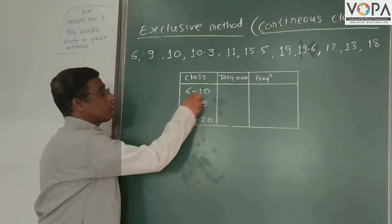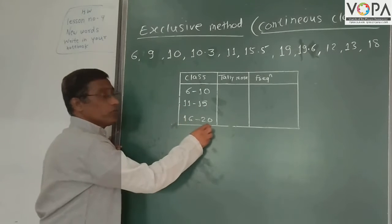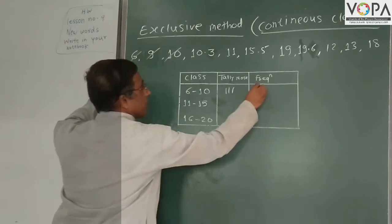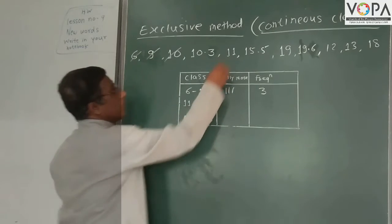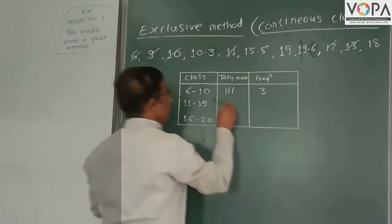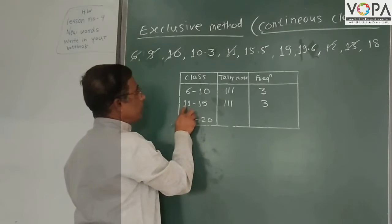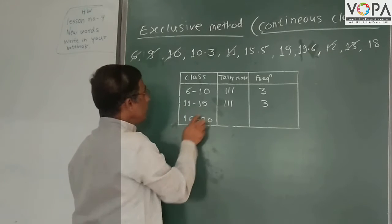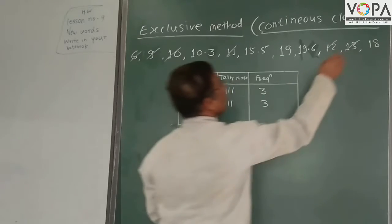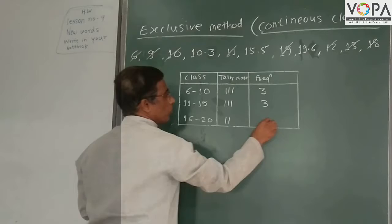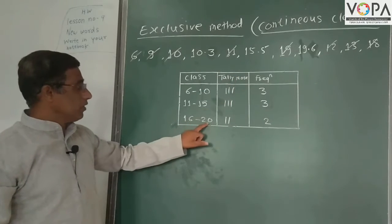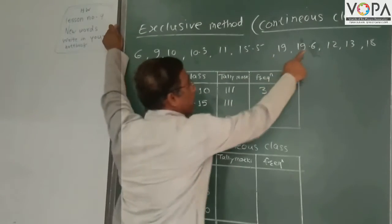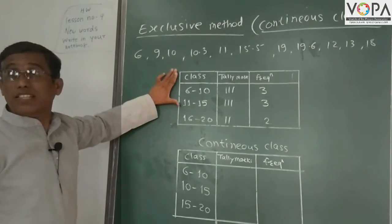If we take discrete classes 6 to 10, 11 to 15, and 16 to 20: for 6 to 10, we get frequency 3. For 11 to 15, we also get 3 numbers, so frequency is 3. For 16 to 20, only 2 observations are there, so frequency is 2. But we can't include 10.3, 15.5, and 19.6 in these classes because these are discrete classes.